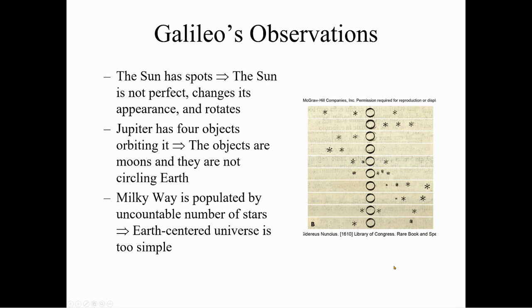He also studied sunspots. The sun is not perfect — it changes appearance and it rotates. Also with that telescope, he noticed Jupiter had four objects orbiting it. Those objects are moons, and they are not circling the earth — they are circling Jupiter.